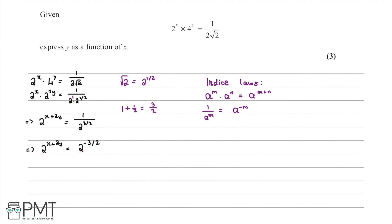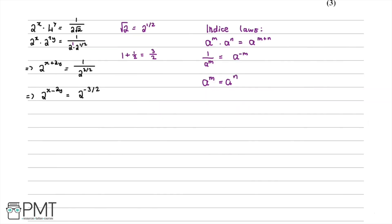Now we have an expression where we have 2 to the power of something equals 2 to the power of something. We know that if a to the power of m is equal to a to the power of n, then m is equal to n. Both exponents are highlighted here in yellow, so we can therefore say that x plus 2y is going to be equal to negative 3 over 2.